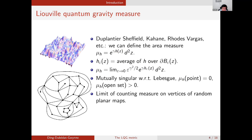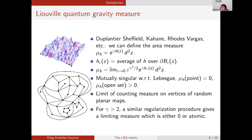The special case of Tutte embedding for uniform triangulations was proved to converge to the square root eight over three Liouville quantum gravity in a recent work by Holden and Sun. It is also natural to wonder what happens if we apply the similar regularization procedure for gamma larger than two. If we normalize by the expectation, we get a zero measure; if we normalize by the typical value, we get an atomic measure. Neither of these is particularly interesting, and these are not related to the supercritical LQG metric that will be discussed later.